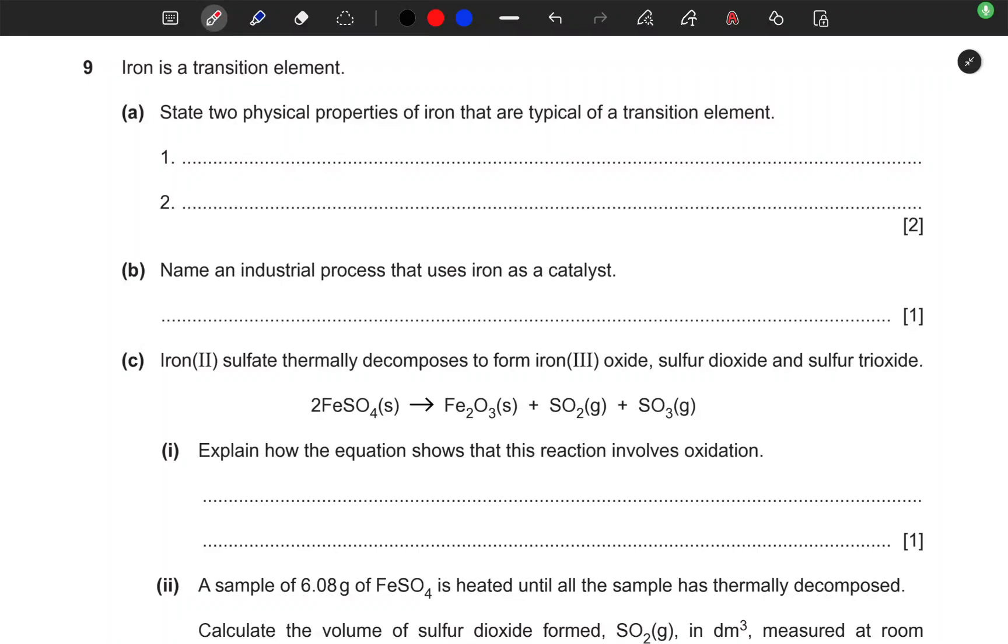Iron is a transition element. State two physical properties of iron that are typical of a transition element. It's a very easy question. Number one, they have high boiling points, they have high melting points, high densities.